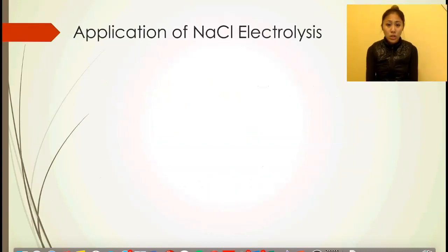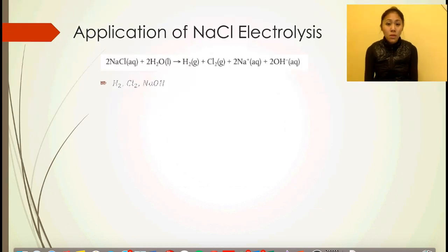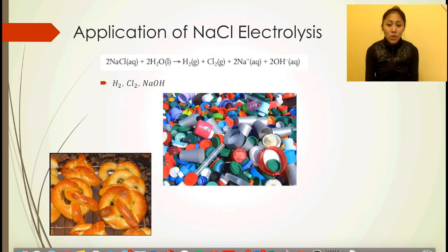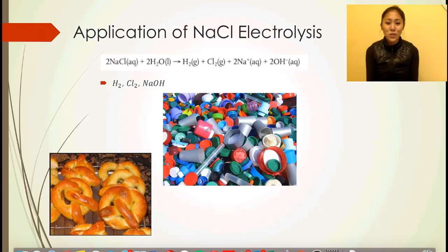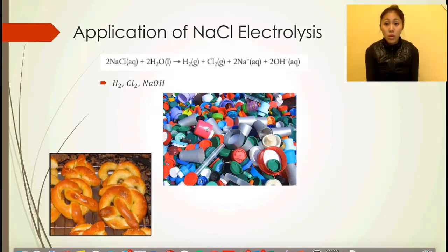Looking at the application of sodium chloride electrolysis: this produces hydrogen gas, chlorine gas, sodium ions, and hydroxide ions. So we get sodium hydroxide, chlorine, and hydrogen. Chlorine and hydrogen gas — all of these are very important in the production of various things. An example is the coating on a pretzel, another is the production of plastic, and it can also produce paper. When you produce paper from wood pulp, you need to bleach it to make it look white, and that's where these components come in. By using electrolysis, we're able to separate these compounds into their simpler elements.